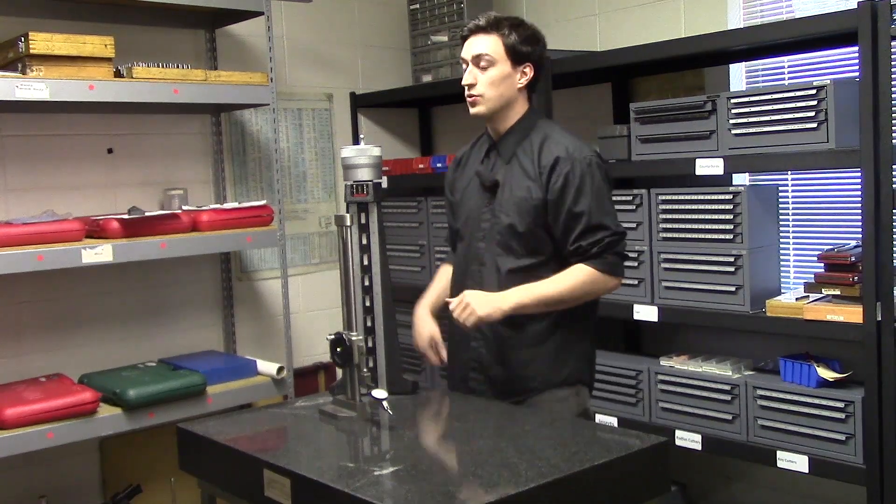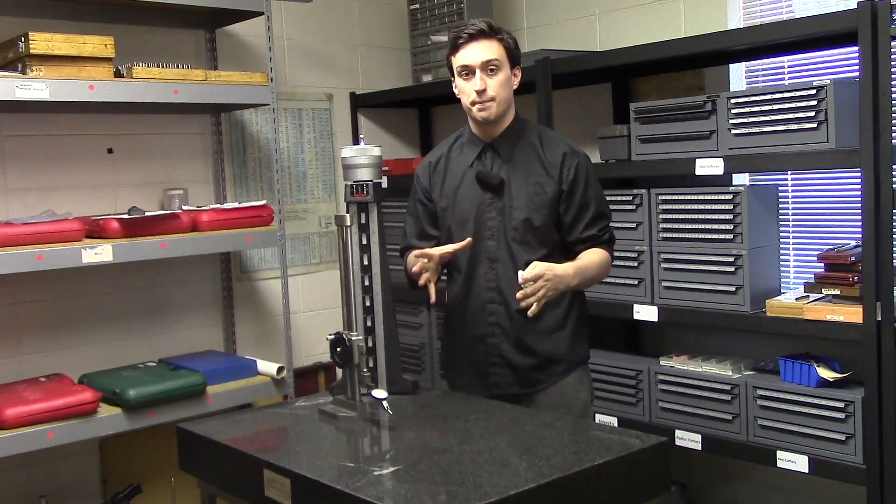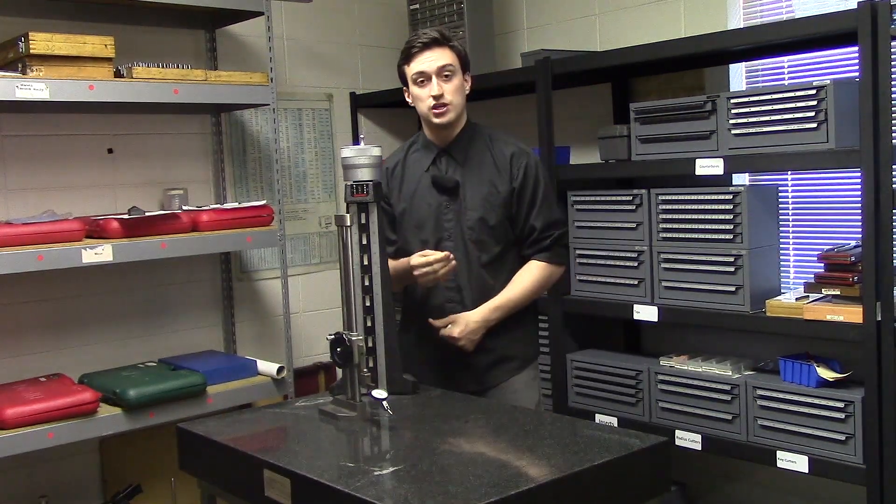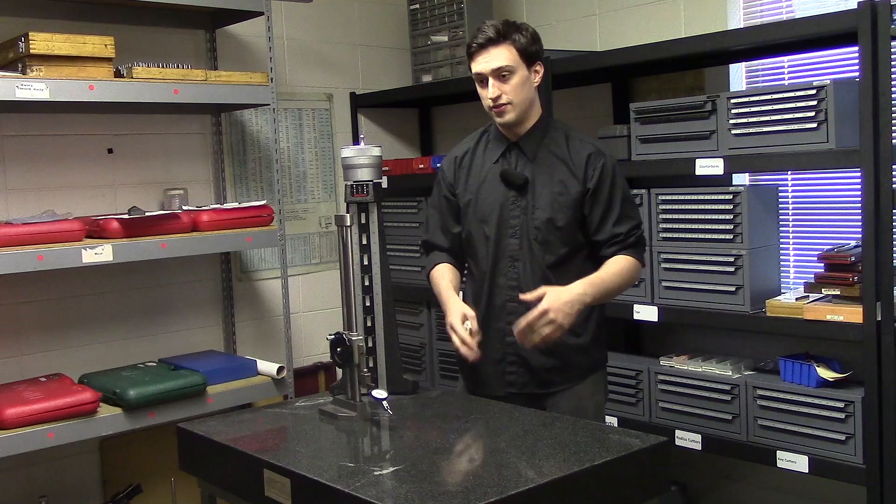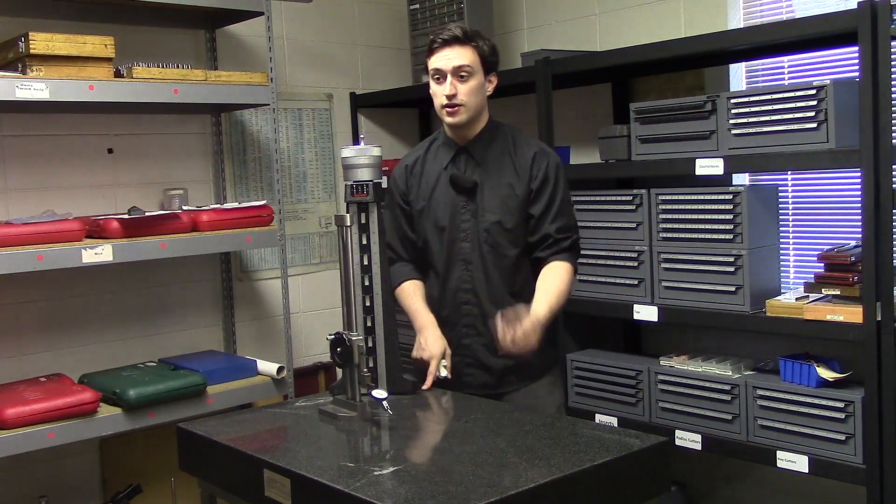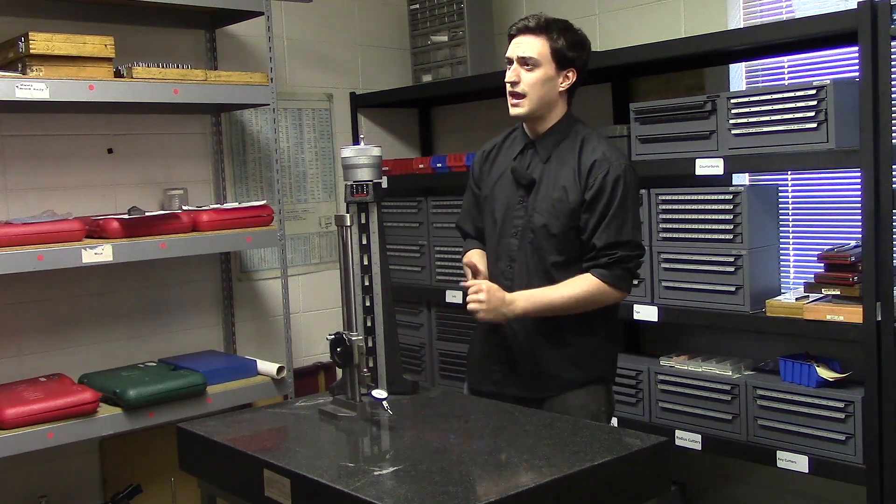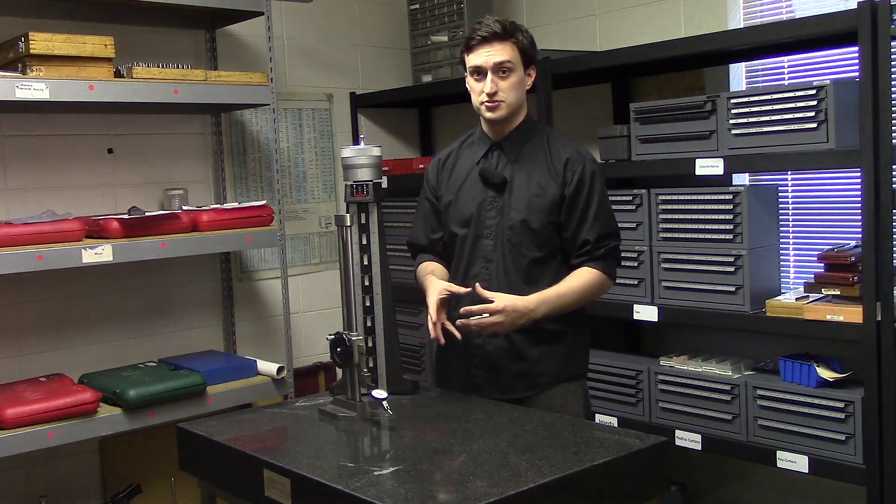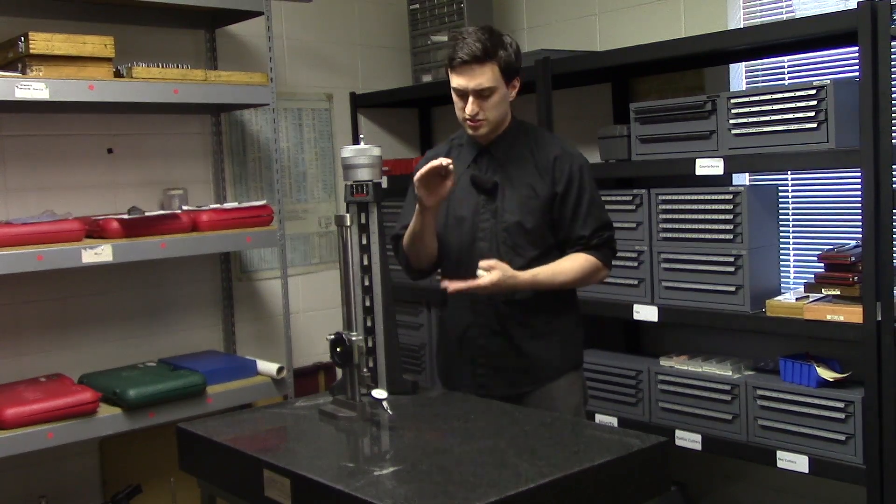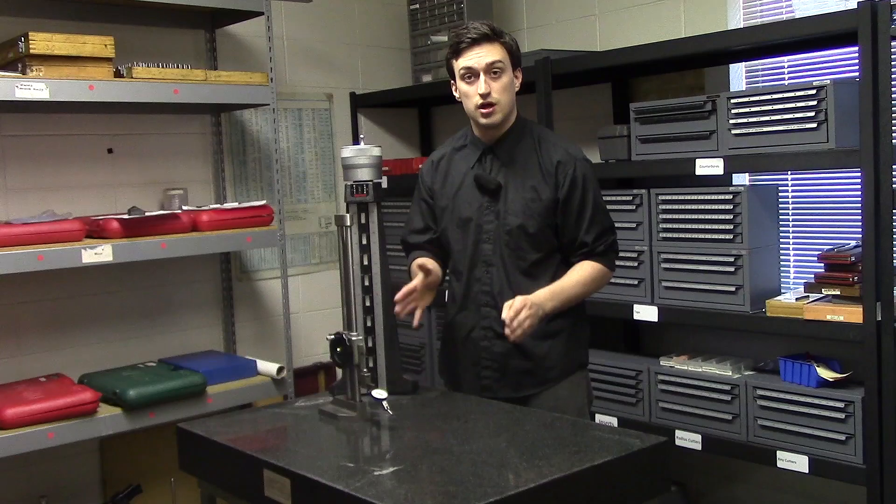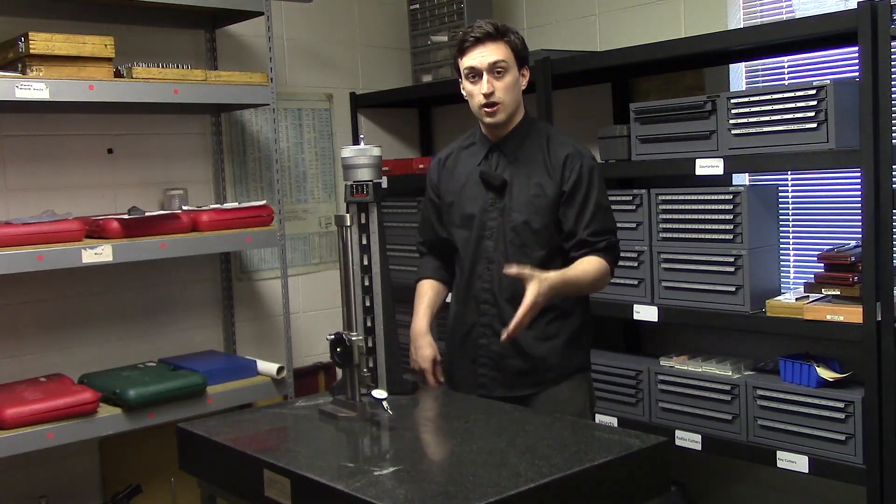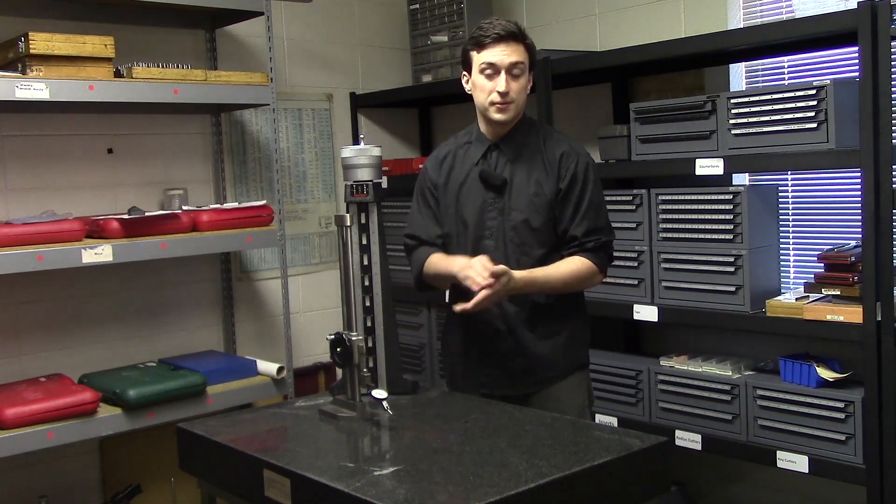But besides that you want to get your part and you also want to get a big square block of some sort and a ground pin. And I will be showing you why you need those two things in the next few minutes. You can get a V-block or something like that. Just as long as it's a square ground block you might be able to get a one two three block something like that.